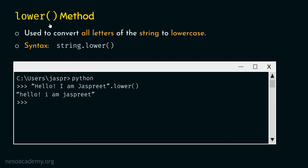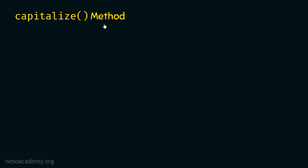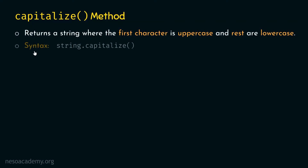That's all about the lower method. Let's move to the next topic, which is the capitalize method. Capitalize method returns a string where the first character is uppercase and the rest are lowercase. So if we have a string where all characters are uppercase, capitalize will make the first character uppercase and convert the rest to lowercase. The syntax is: string.capitalize()